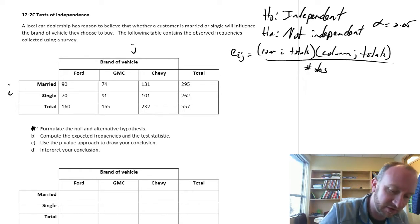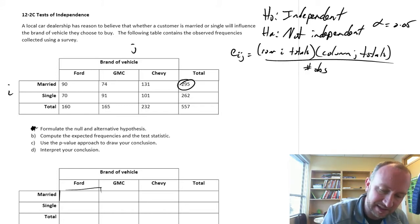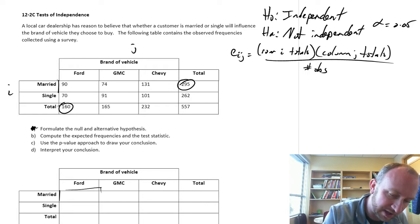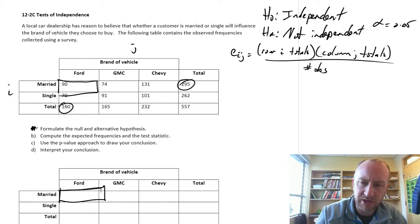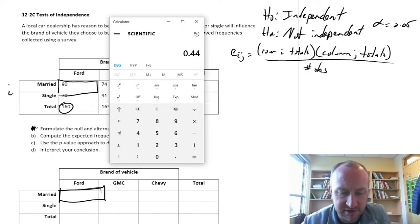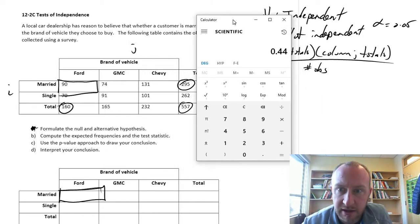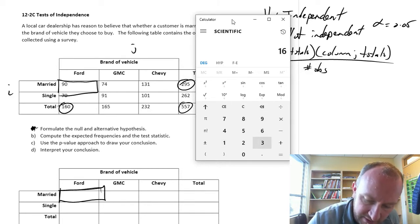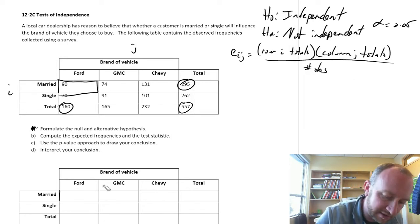But for example, this first cell, we're going to be using, here's our row total times the column total, right? If I'm looking at married Ford owners, so married Ford owners, those are the relevant totals. We multiply those together and divide it by the total number of observations. So if we get our calculator out here, this is 160 times 295 divided by 557, so 84.7.